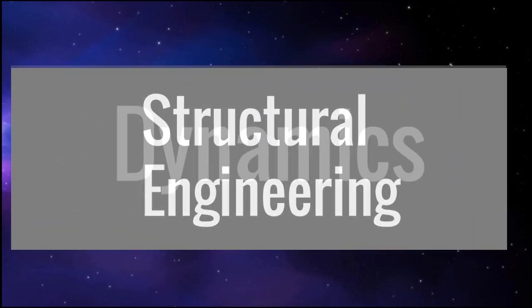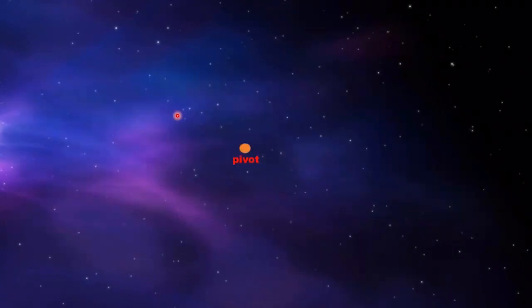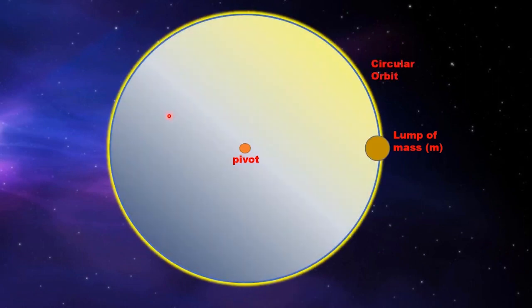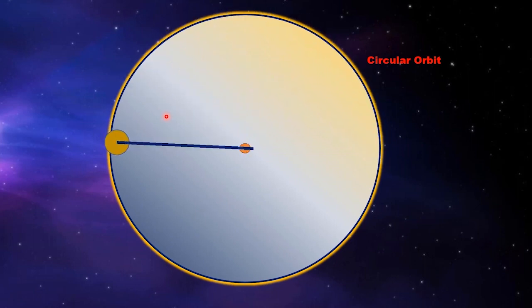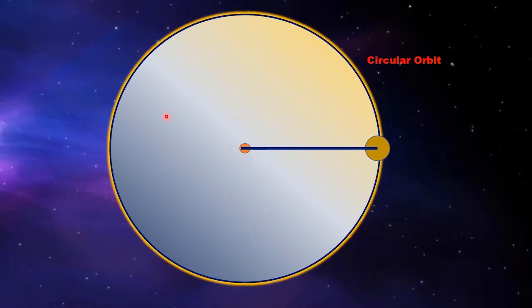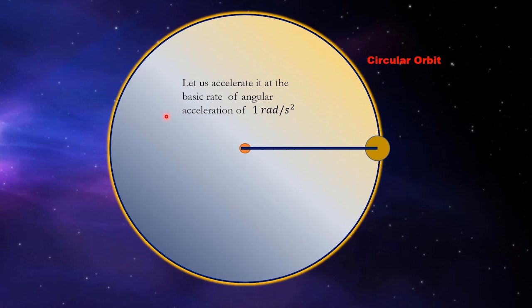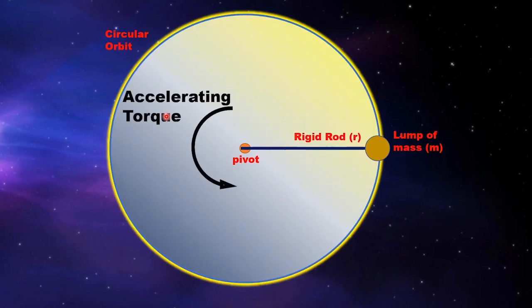To fully understand the idea and origin of moment of inertia, you really have to go to the basic dynamics. To do that, consider a single pivot point and a lump of mass located at a certain distance, and revolve it around the pivot point by attaching a rigid rod of length r, so that the motion will look like this. Let us accelerate it at a basic rate of angular acceleration of one radian per second squared. To produce such, we need to induce a certain accelerating torque.